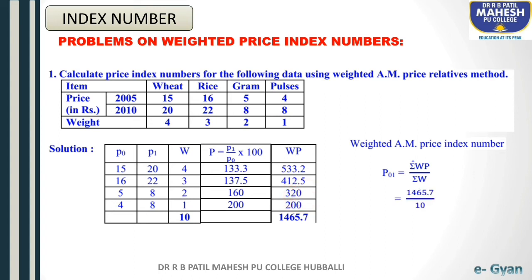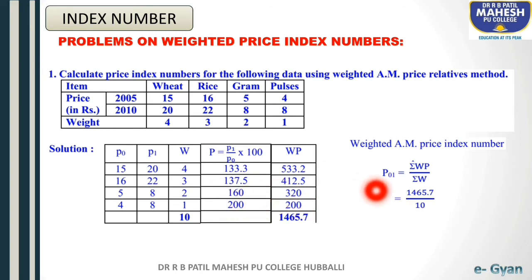Now substitute in the formula: summation WP is 1465.7 divided by summation W which is 10. After solving, P01 equals 146.57. So the weighted arithmetic mean price index number for this question is 146.57.